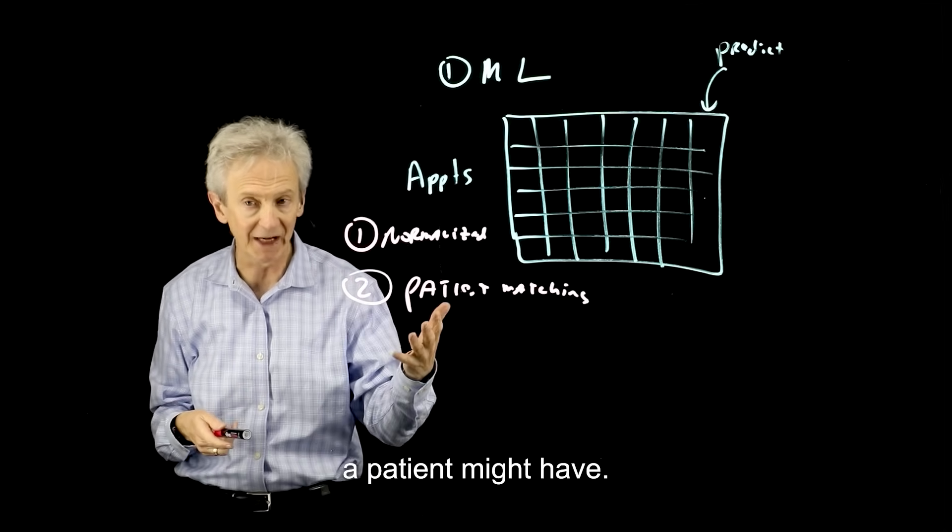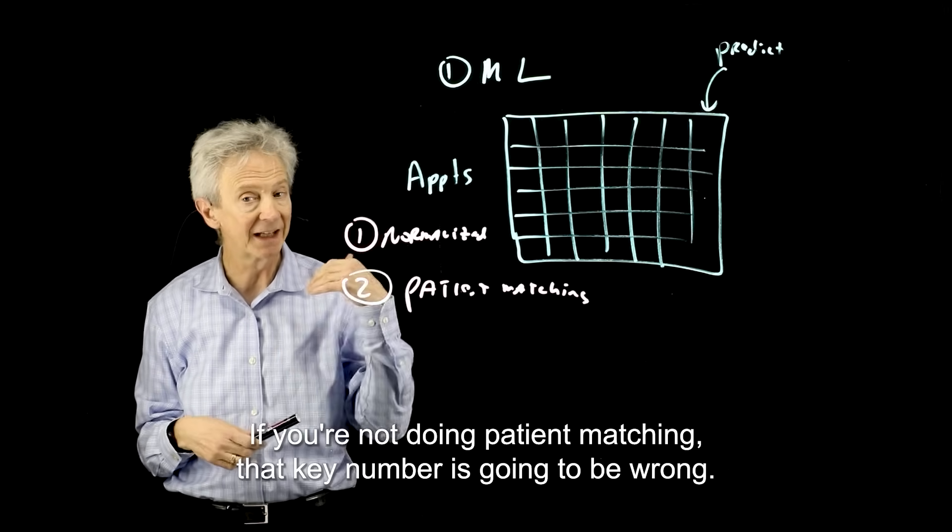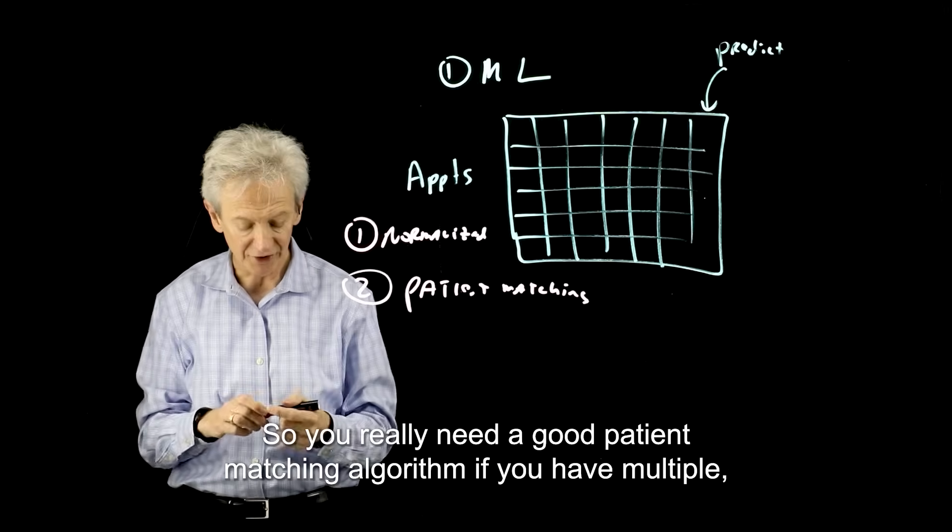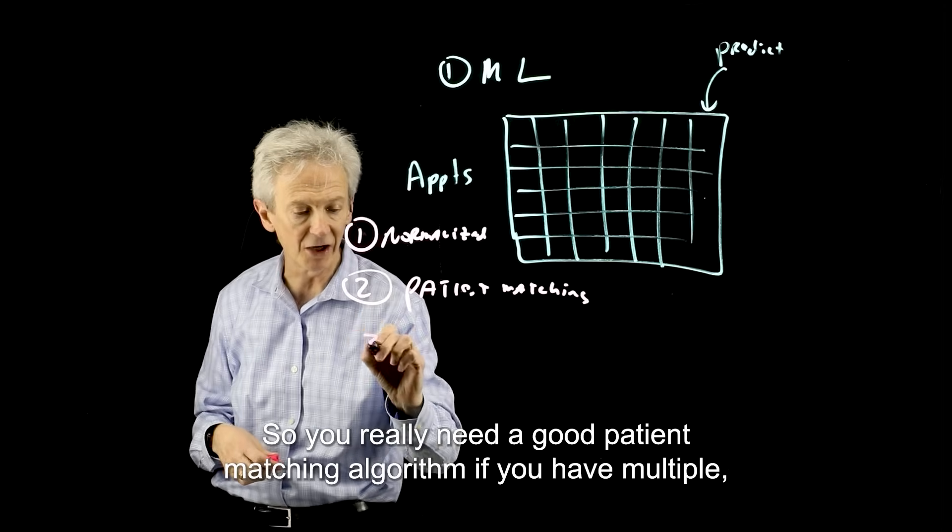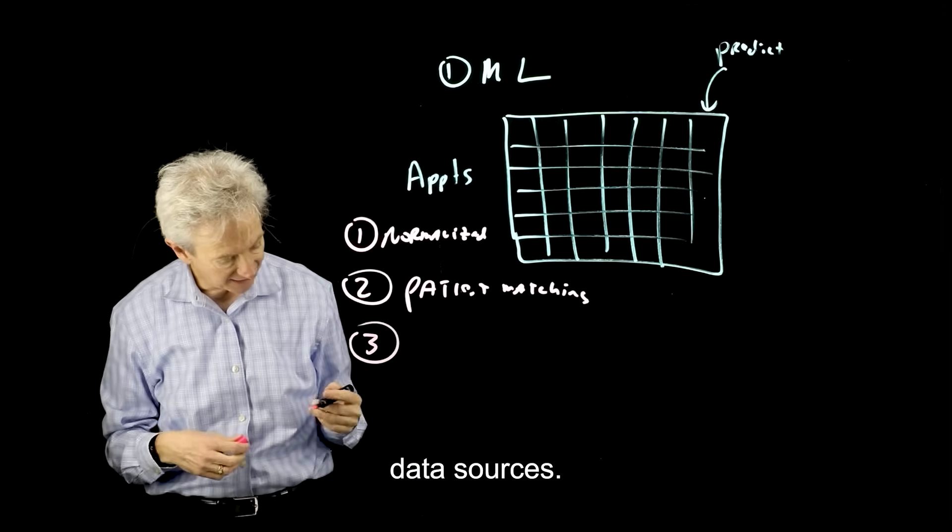So you get a better sense for what the average number of no-shows a patient might have. If you're not doing patient matching, that key number is going to be wrong. So you really need a good patient matching algorithm if you have multiple data sources.